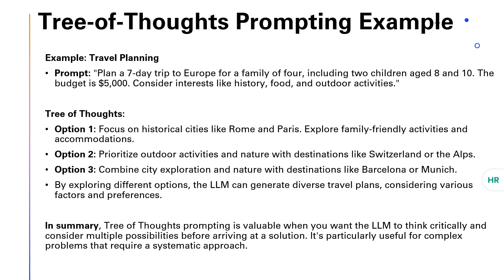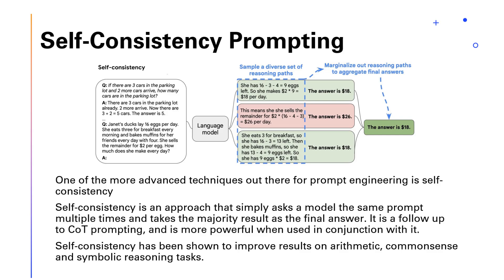The goal is to provide a comprehensive overview of different approaches to the problem. Tree of Thoughts prompting is valuable when you want the LLM to think critically and consider multiple possibilities before arriving at a solution — particularly useful for complex problems requiring a systematic approach. Self-consistency is another advanced technique that simply asks a model the same prompt multiple times and takes the majority result as the final answer. It is a follow-up to COT prompting and more powerful when used in conjunction with it, shown to improve results on arithmetic, common sense, and symbolic reasoning tasks.